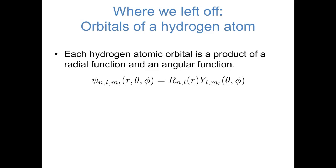Each orbital, psi, can be expressed as the product of a radial function, capital R, and an angular function, capital Y, where the radial function has two quantum numbers, n and l, and the angular function has two quantum numbers, l and m sub l. So in total, each hydrogen orbital has three quantum numbers, n, l, and m sub l. There are certain restrictions on what values those quantum numbers can have: n has to be a positive integer, l has to be an integer ranging from 0 to n minus 1, and m sub l has to be an integer ranging from negative l to l.